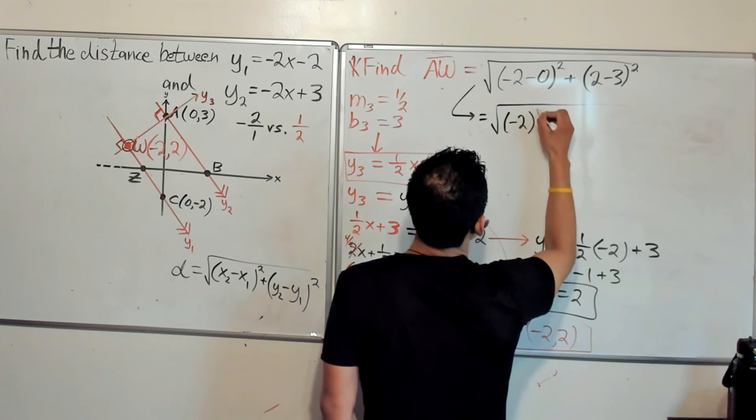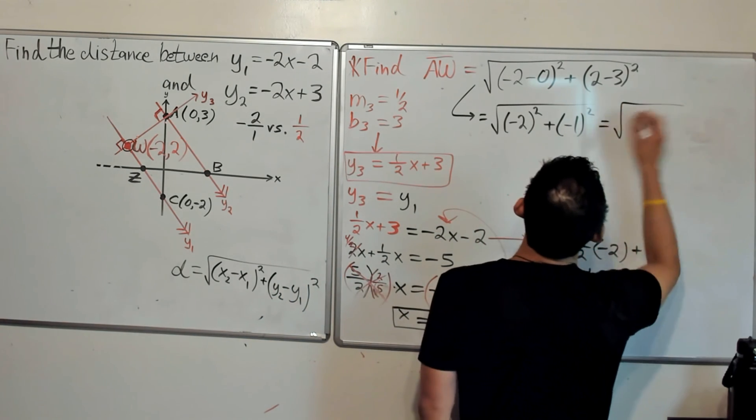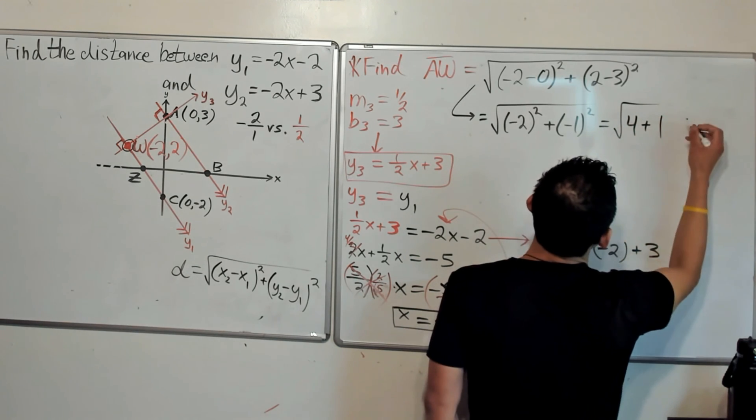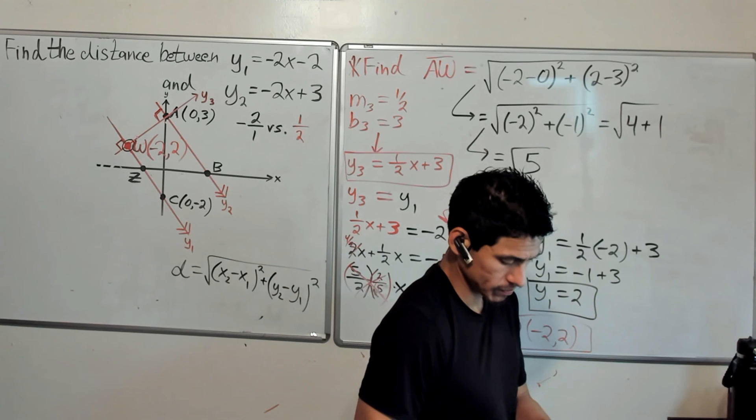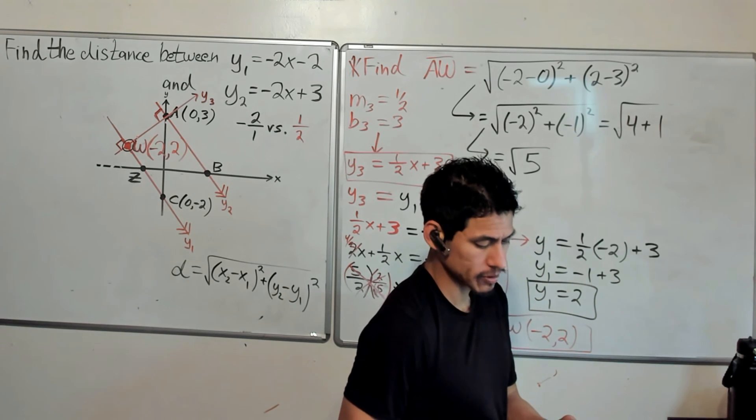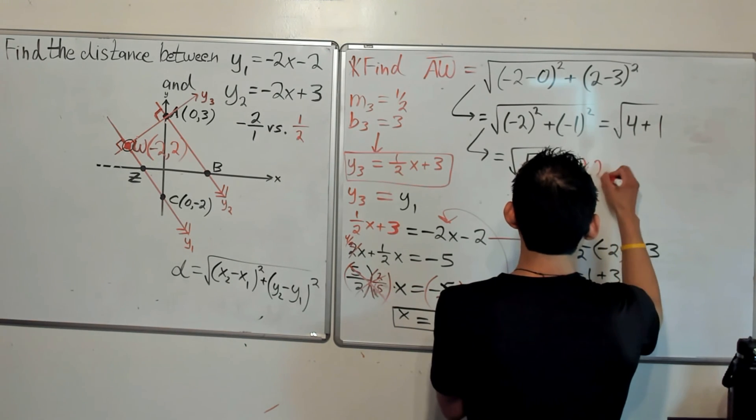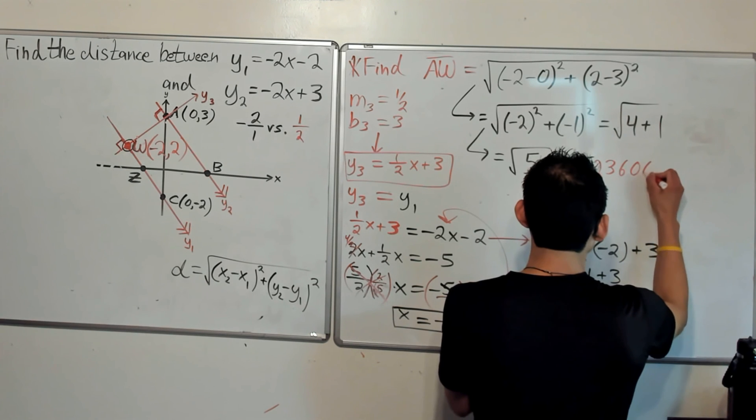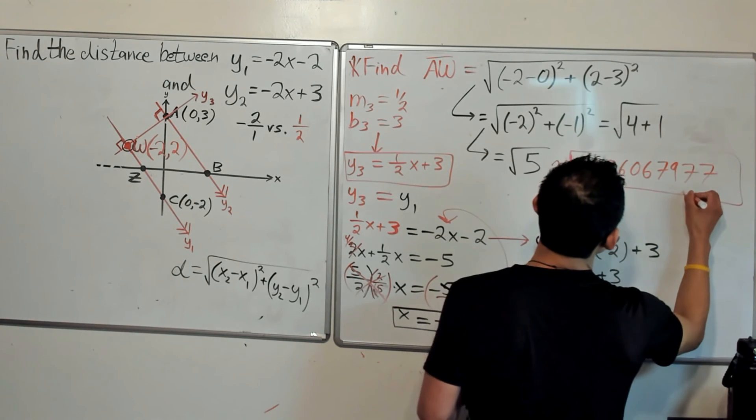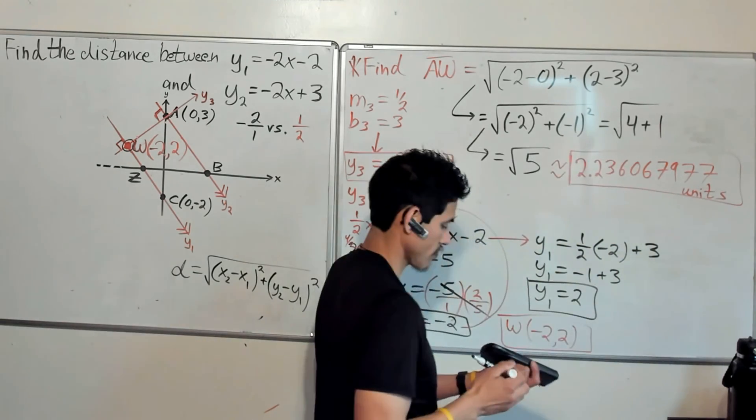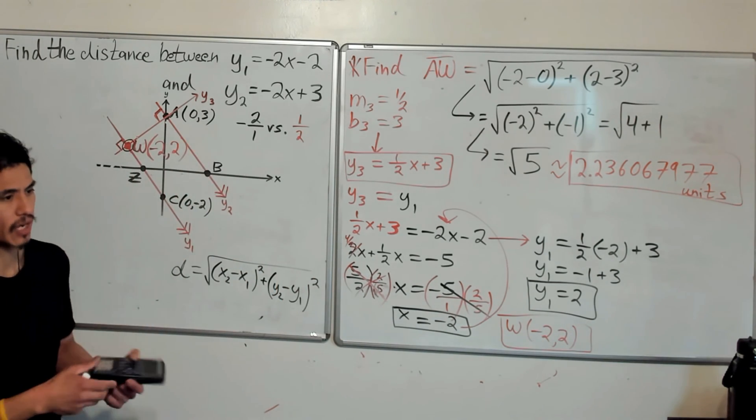Okay, so then now just simplifying this we get negative 2 squared plus negative 1 squared, 4 plus 1, the square root of 5. And that'll be like 2 point something-ish, yeah about 2.36. And again if you're afraid of rounding just don't round, just write as much as your calculator says, 2.236067977 units. And again that makes sense because our graph is not perfect but it's you know, logically it makes sense.